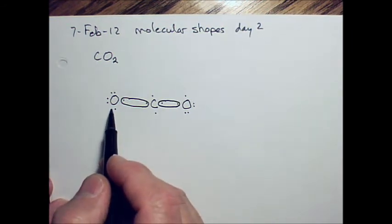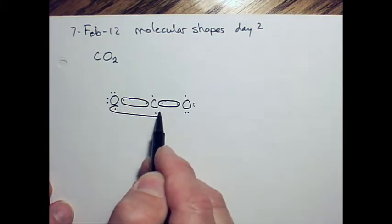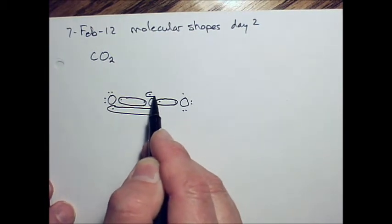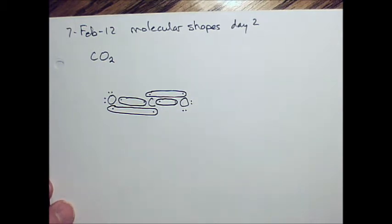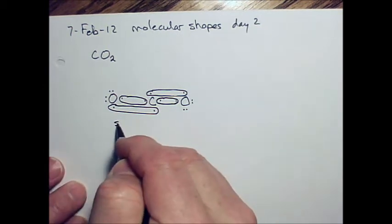That brings oxygen up to seven and carbon up to six. If I share two more like this, then both the carbon and the two oxygens have the eight electrons they want. So this is the sharing arrangement then.